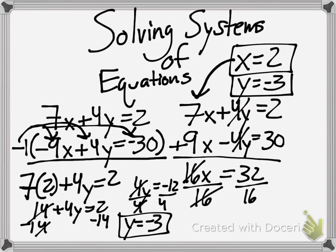Now, some teachers actually want you to put this answer in an ordered pair. So, you'll put it as open parentheses, 2, comma, negative 3, close parentheses. And that'll be your ordered pair as a solution for your systems of equations.